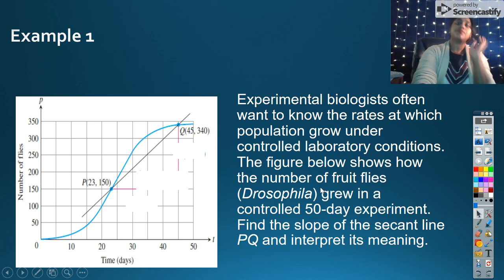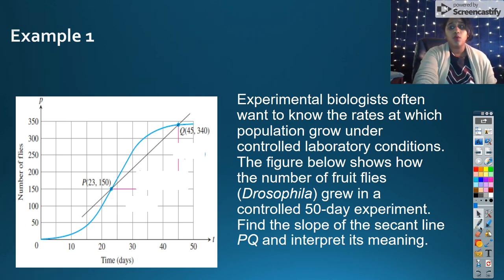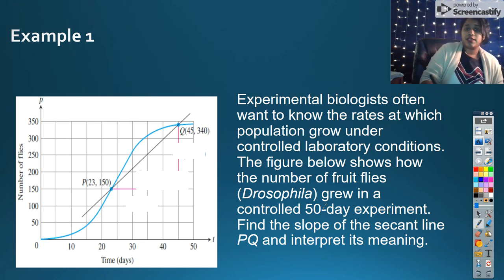So I have some examples. In example one, we have this graph that's given to us and we have it in a question. Experimental biologist, yada yada yada. So the very first thing, of course, with all word problems, who cares about all of the nonsense? Let's find the information that is important to us.